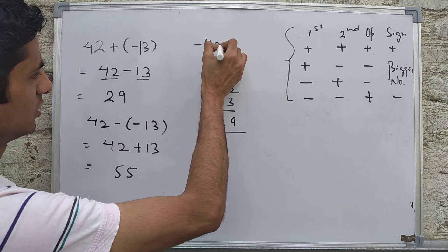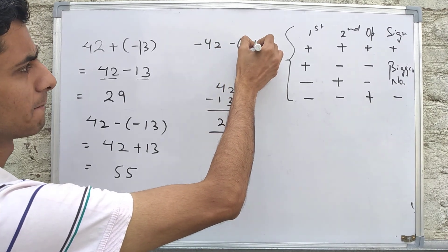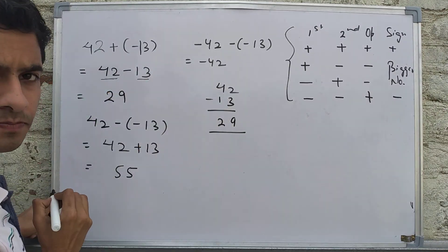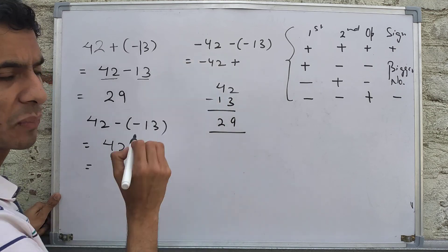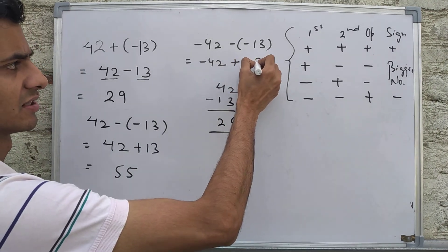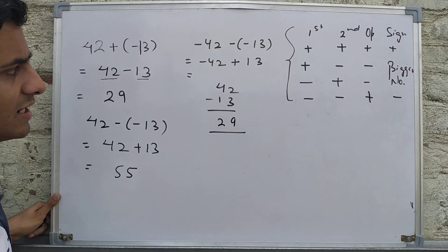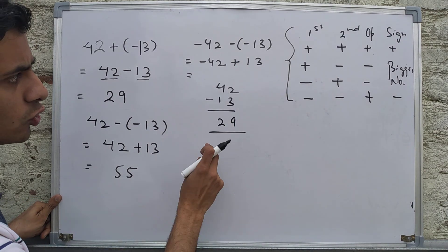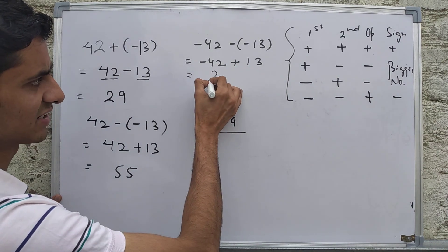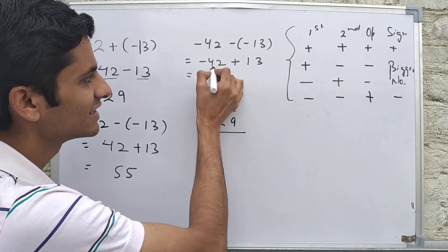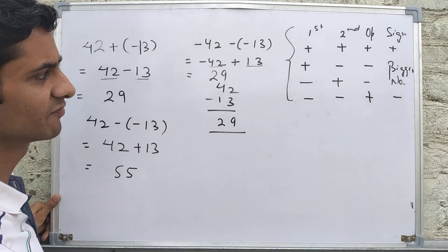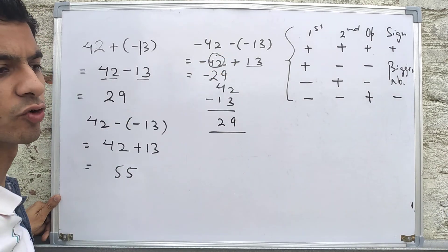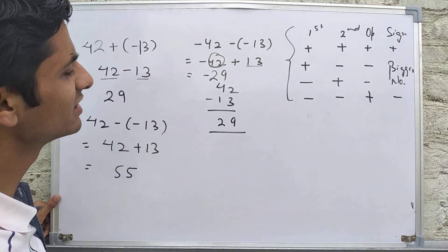Now let's try -42 - (-13). Opening the bracket: negative times negative becomes positive, so it becomes -42 + 13. One number is negative, another is positive, so we subtract: 42 - 13 = 29. The sign is of the bigger number, which is 42, so the answer is -29.